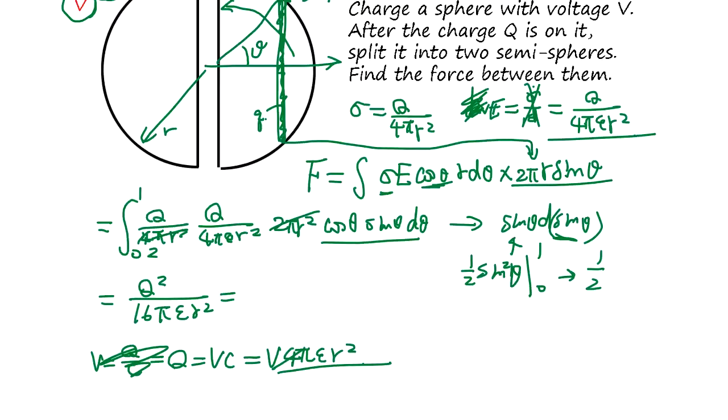So Q² is V² times C², which is 16π²ε₀²r². That goes into the denominator: 16πε₀r².